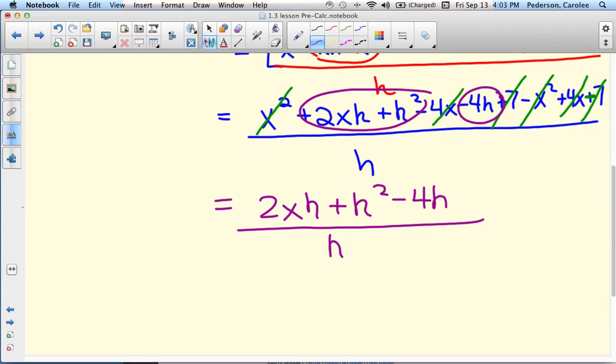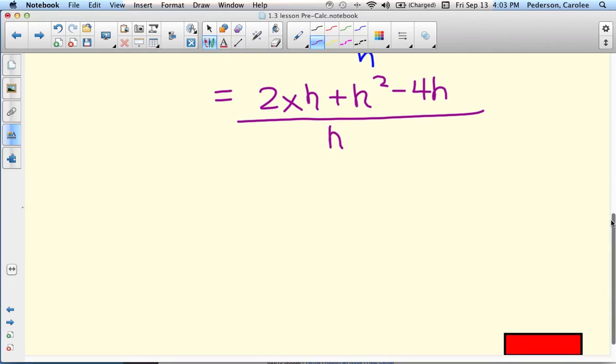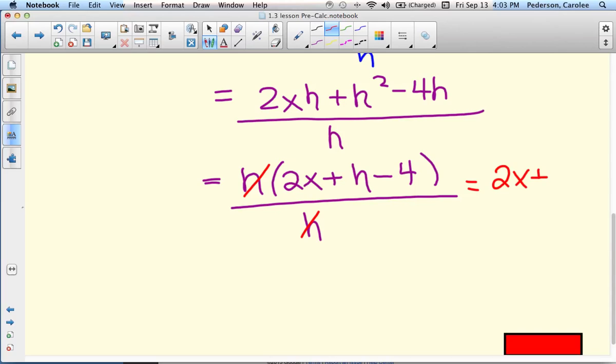Last thing we need to do is factor out GCF in the numerator of an h. So we have h times 2x plus h minus 4, all over h. And we have a common factor of an h cancel out. Final answer: 2x plus h minus 4.